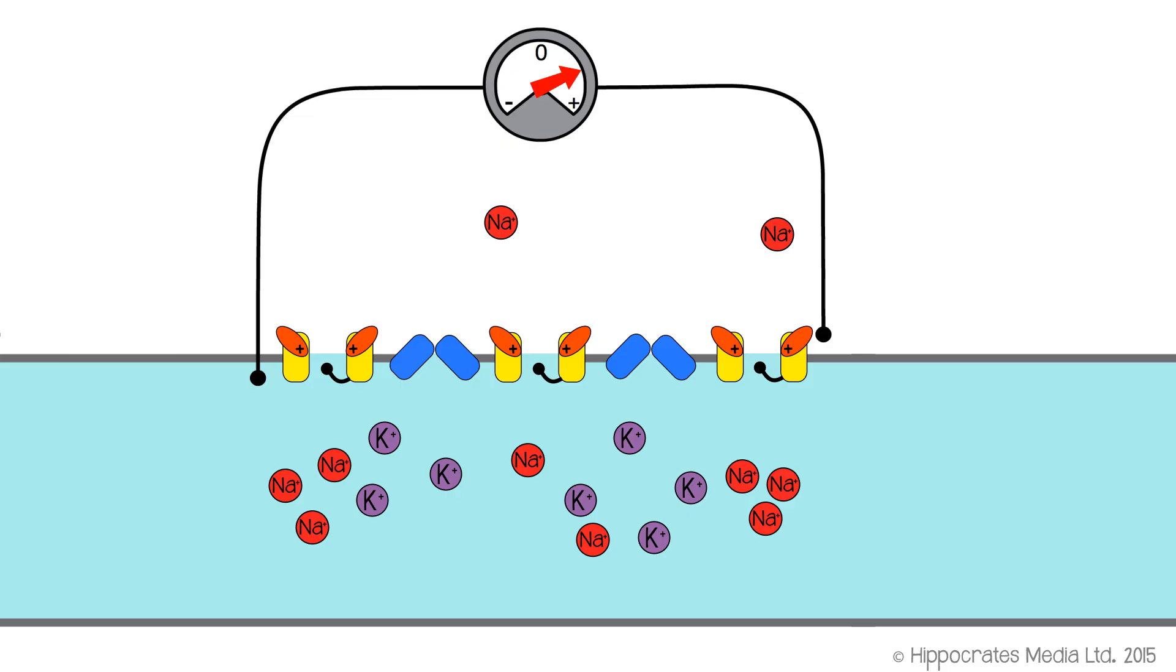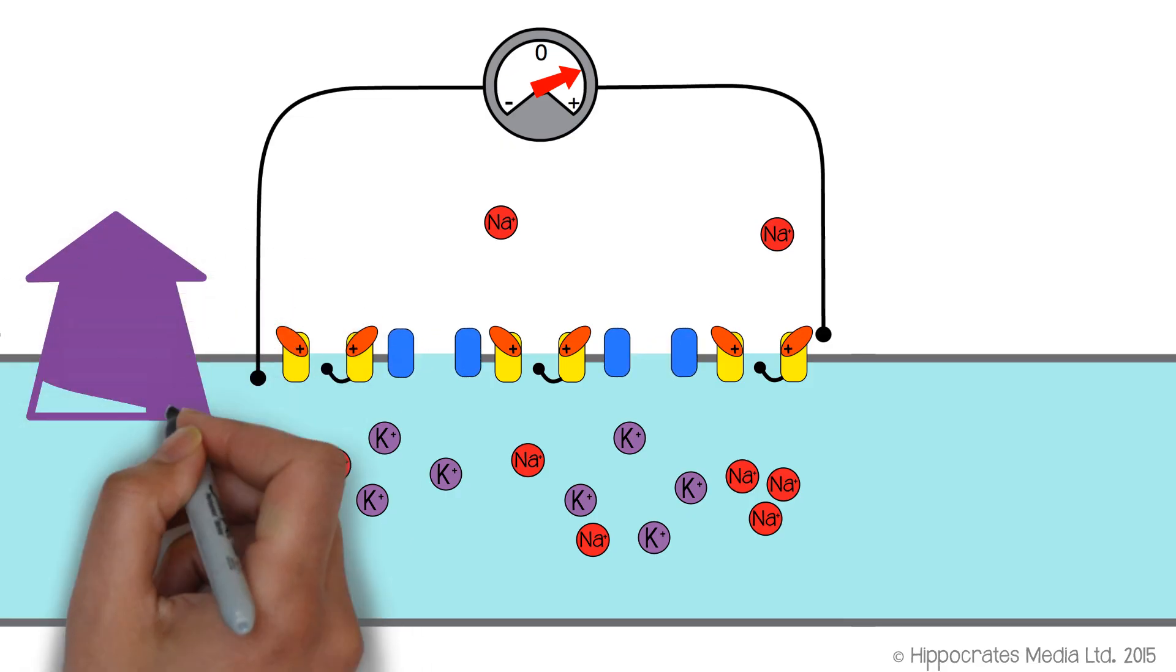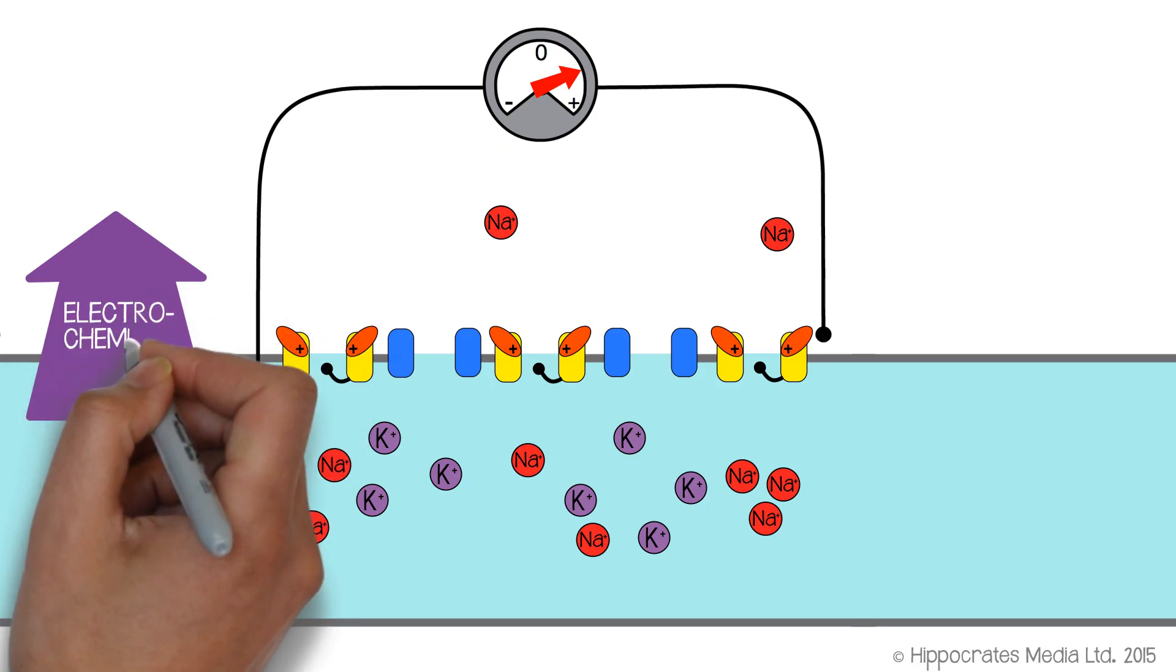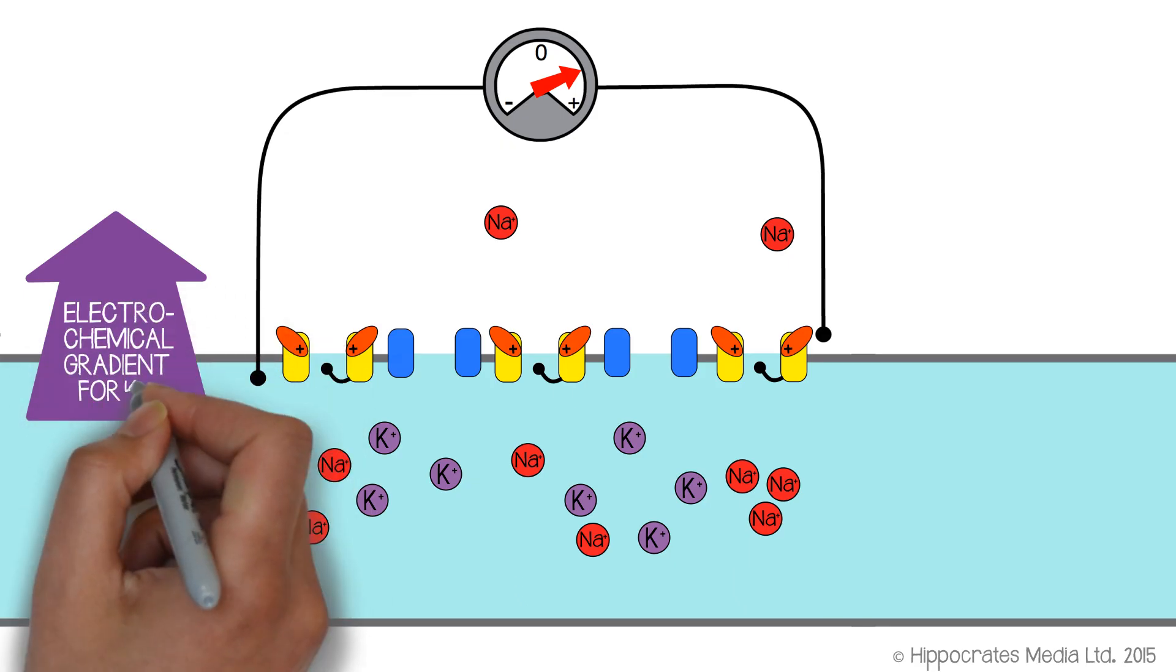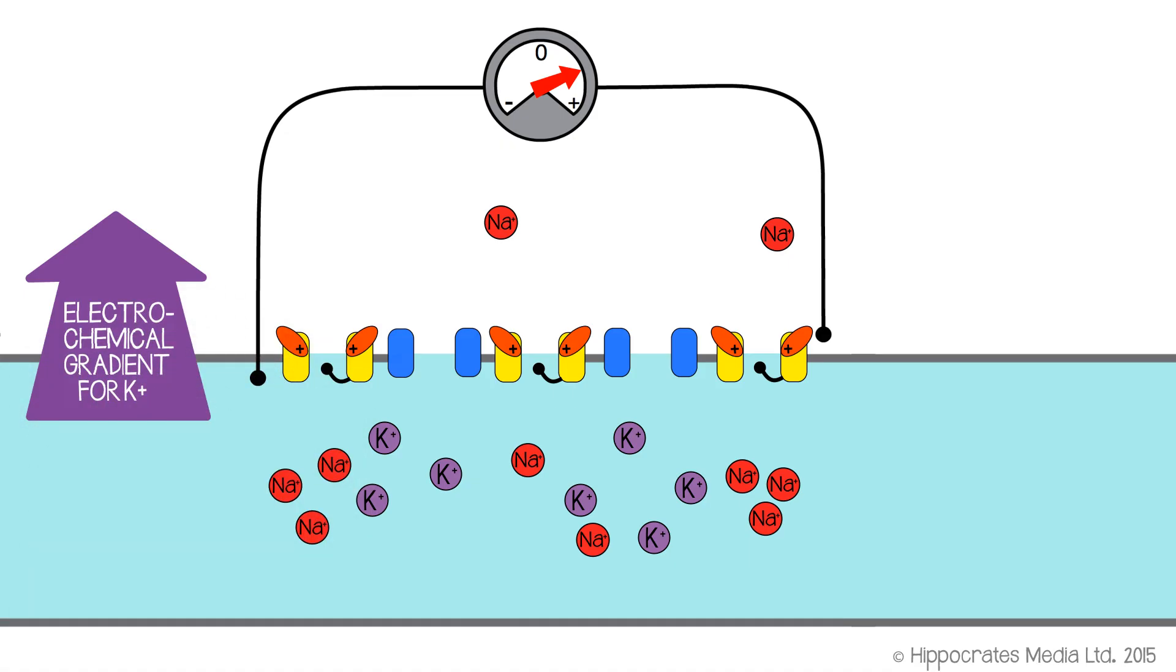Now, at that point, the membrane begins to repolarize. In other words, the membrane becomes more negative again. And the reason it does that is that another group of voltage-gated channels has begun to open, and those are the voltage-gated potassium channels. Now the electrochemical gradient for potassium was out of the cell. Potassium wanted to leave the cell, leave the interior of the cell.